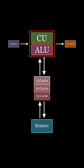When the CPU needs data, it first checks if the data is present in the cache. If the data is found in the cache, it is fetched for processing. However, if the data is not found in the cache, the CPU then looks into the main memory for the required data. This caching mechanism helps improve overall system performance by reducing the time taken to access frequently used data and instructions.